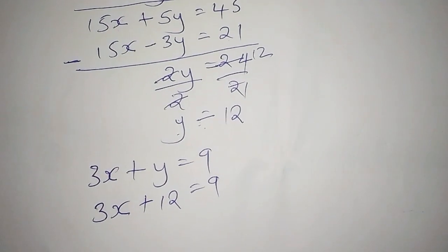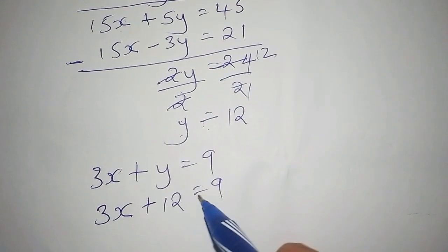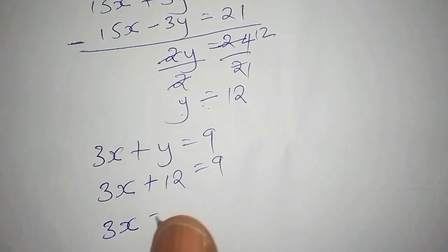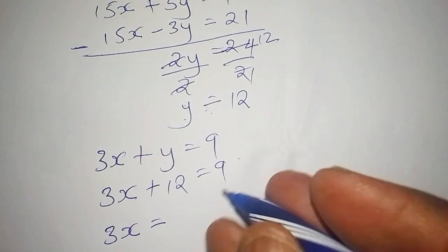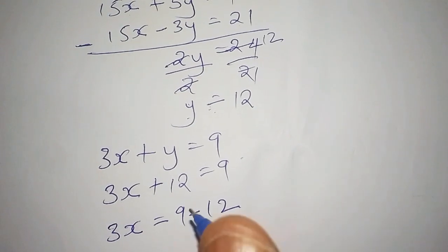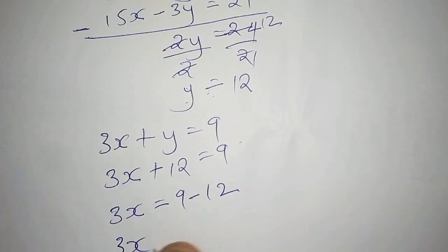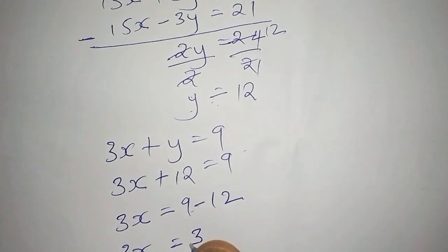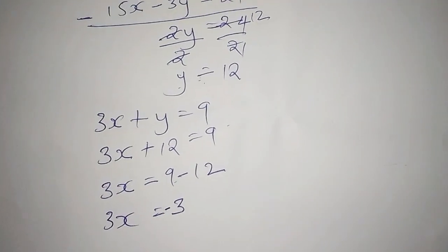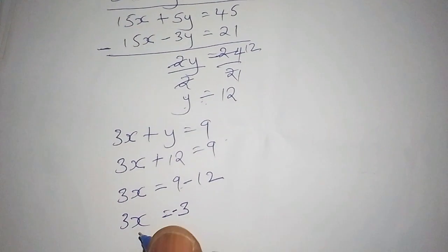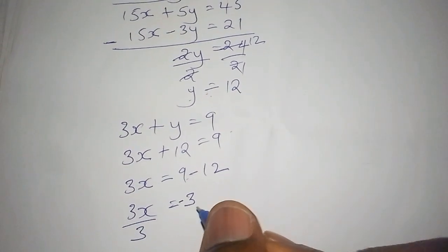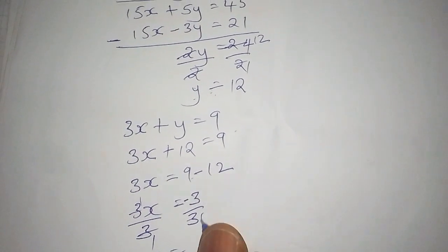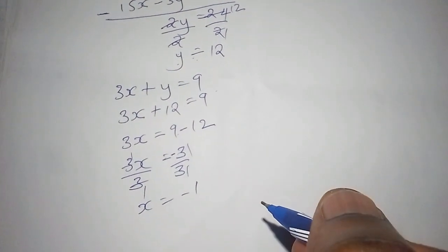The next step is to work out this equation. So 3x equals 9 minus 12, which gives us 3x equals negative 3. We divide both sides by 3, so that we remain with x. Therefore x is equal to negative 1.